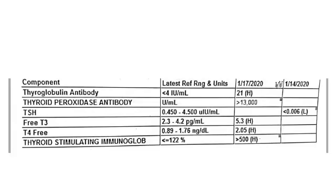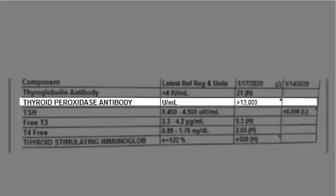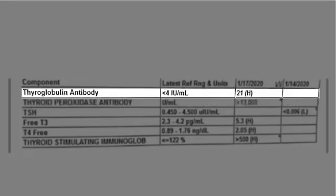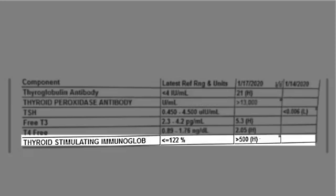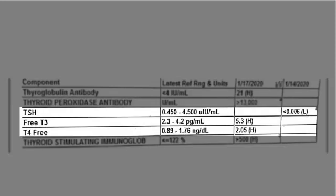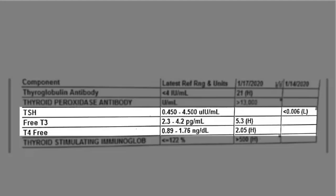Here we see all three antibodies. The focus is thyroid peroxidase antibodies, which are really, really high — greater than 13,000. We see thyroglobulin antibody also elevated at 21, and thyroid stimulating immunoglobulin is greater than 500. Free T3 and free T4 are both elevated, and TSH is depressed. This is a case of Graves' disease — a patient who also has positive thyroid peroxidase and thyroglobulin antibodies. There will be separate videos on thyroglobulin antibody and thyroid stimulating immunoglobulins.